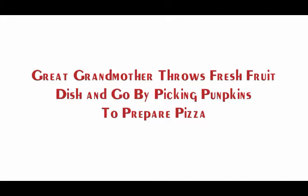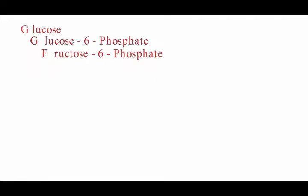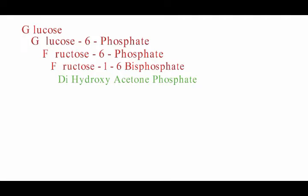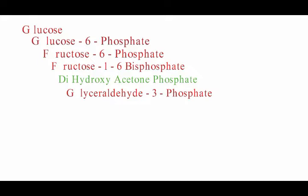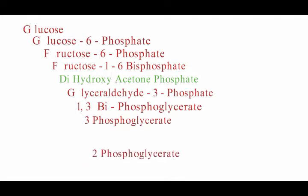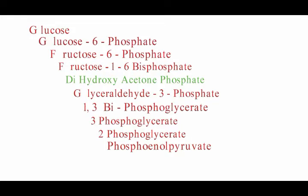Taking all the first letters of the mnemonic and matching them to glycolytic products: G — Glucose, G — Glucose-6-phosphate, F — Fructose-6-phosphate, F — Fructose-1,6-bisphosphate, D — Dihydroxyacetone phosphate, G — Glyceraldehyde-3-phosphate, B — 1,3-bisphosphoglycerate, P — 3-phosphoglycerate, P — 2-phosphoglycerate.